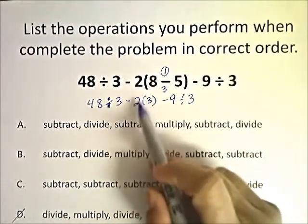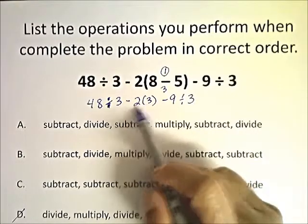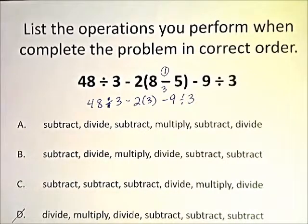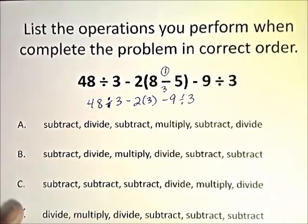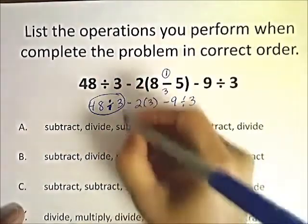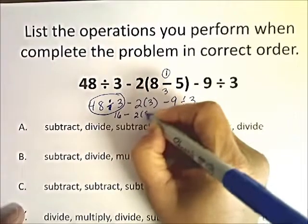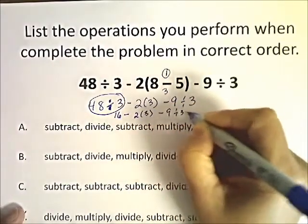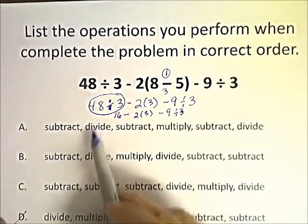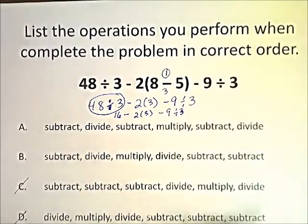Notice this really isn't in parentheses anymore — it's just a multiplication problem here now. So what would our next step be? If we have parentheses, exponents, multiply, divide from left to right, add, subtract from left to right — the next step then would be our division of 48 divided by 3. And 48 divided by 3 is 16, minus 2 times 3 minus 9 divided by 3.